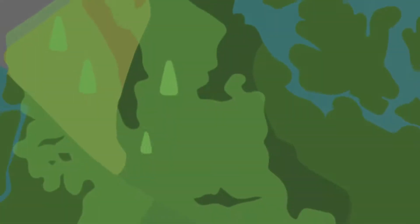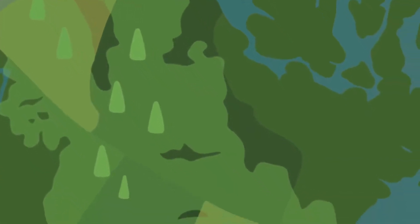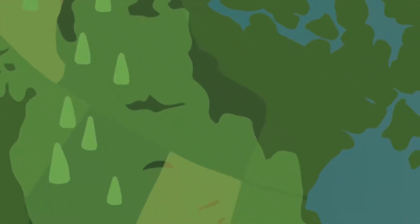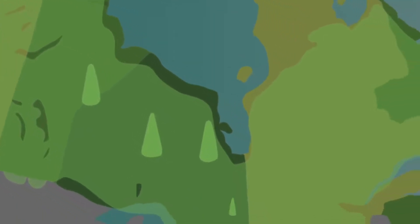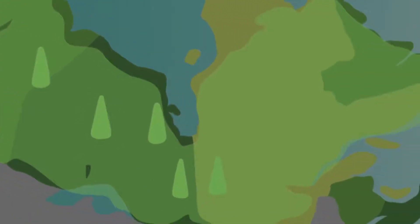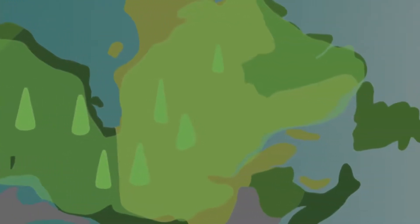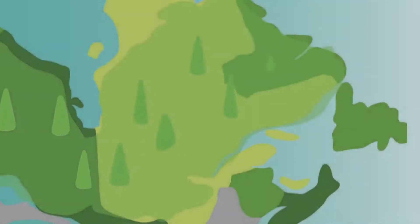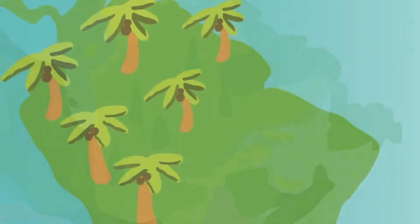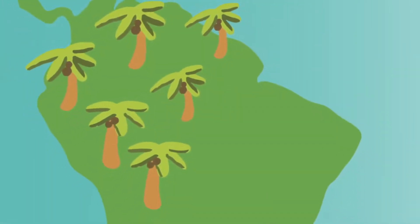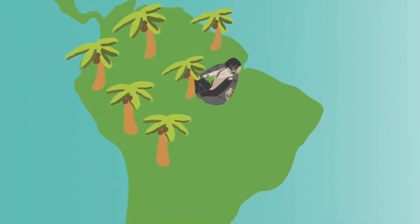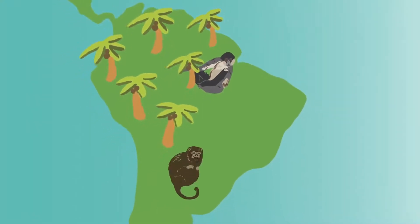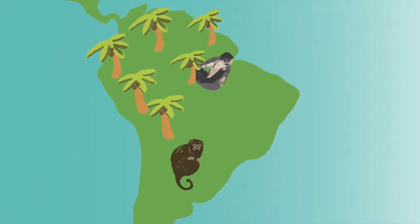Over half of Canada is covered by the boreal forest, the largest forest in the world. The boreal forest expands across many northern countries and helps produce much of the world's oxygen. The trees and other plants in the boreal forest are producing so much oxygen for us to breathe, just like the Amazon rainforest in South America.